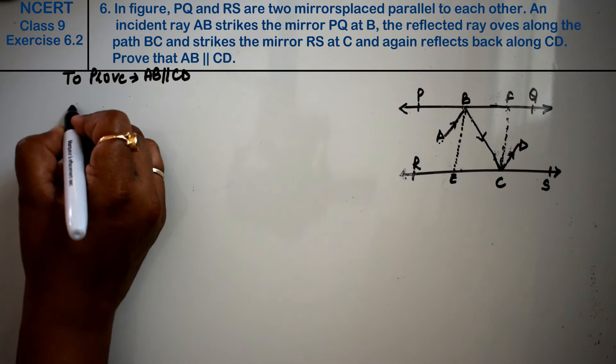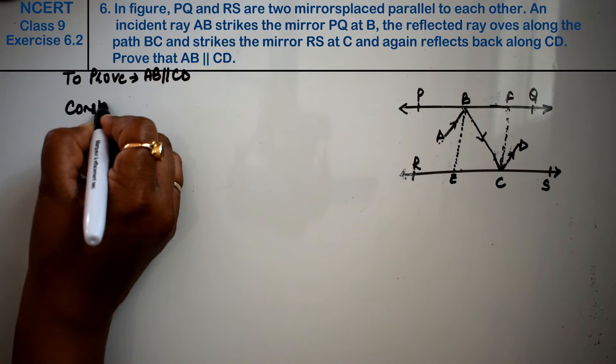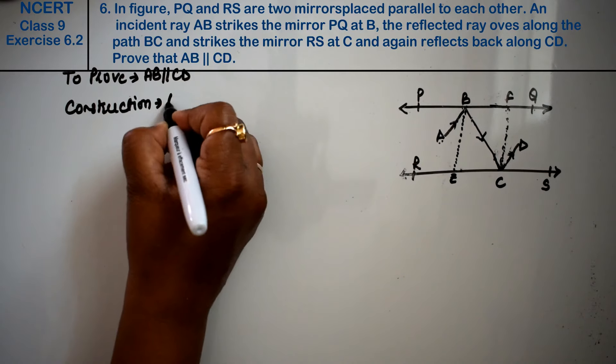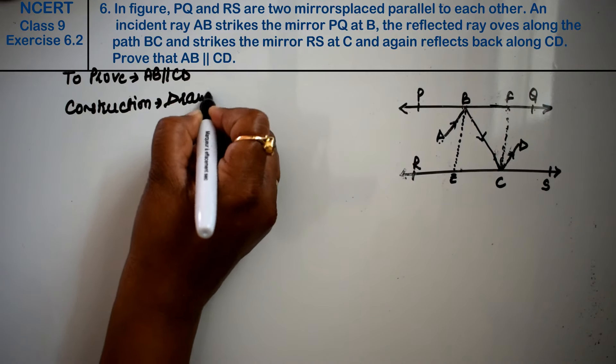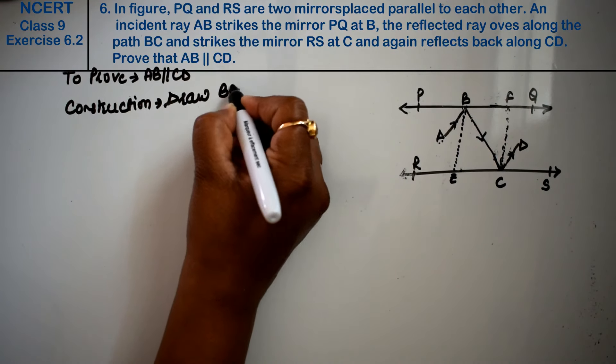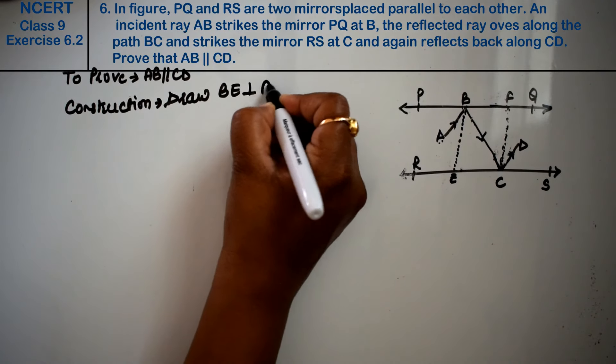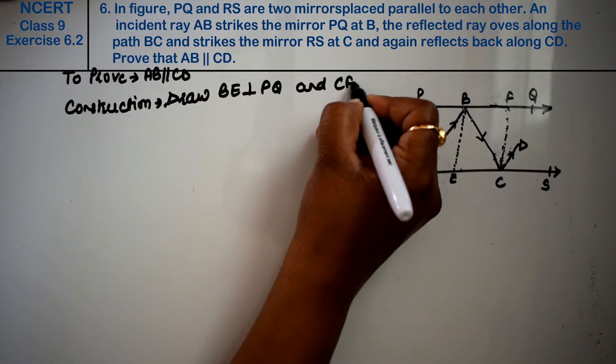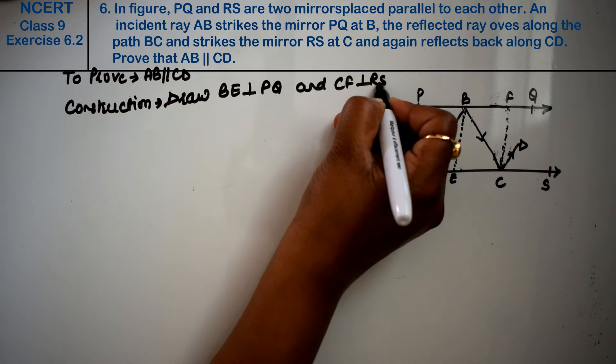Now construction, we write construction: Draw BE perpendicular to PQ and CF perpendicular to RS.